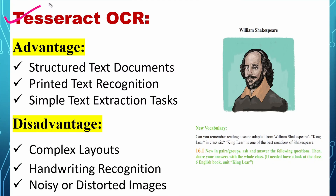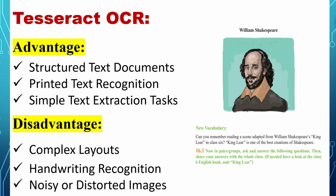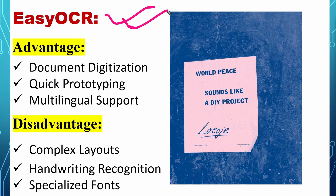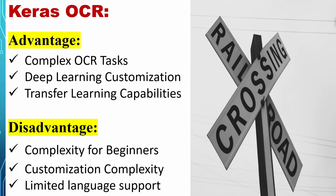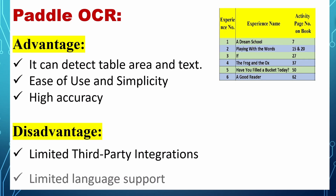Tesseract OCR is best for structured text documents, printed text recognition, and simple text extraction. Its disadvantage is that it does not perform well on complex layouts, handwritten recognition, or noisy/distorted images. EasyOCR's advantages include document digitization, quick prototyping, and multilingual support, but it struggles with complex layouts and handwritten recognition. Keras OCR performs very well for complex layout text recognition, deep learning customization, and transfer learning, but has limitations for beginners and limited language support.